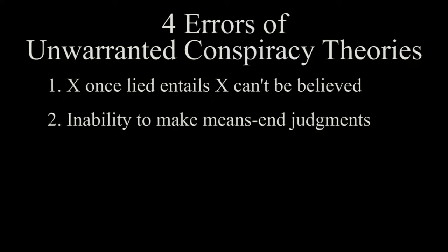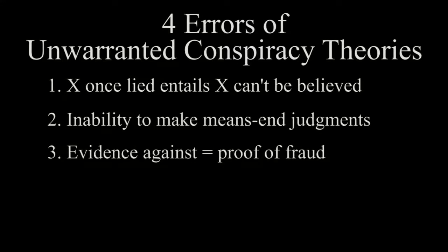Error two: an inability to make rational or proportional means-end judgments. Conspiracy theorists argue that some group of conspirators has been acting to further some aim or to prevent some action from taking place, but often fail to ask whether such a group could further their aim in some easier, less expensive, or less risky way. Error three: treating evidence against the theory as evidence for it. Conspiracy theorists claim that the evidence supporting the official verdict is suspect, fraudulent, faked, or coerced — and because this fraudulent evidence exists, that further proves that the conspiracy theory is correct.